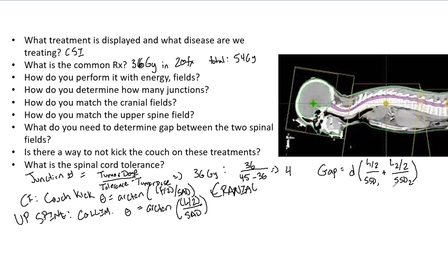The SSD is often 100, kind of as is SAD, but if it's not, you have to alter SSD1 and SSD2. L1 is the upper spine field, and L2 is the lower spine field. This gap we're talking about is the gap at the skin surface. That is how you are going to find your gap.